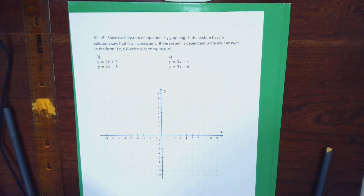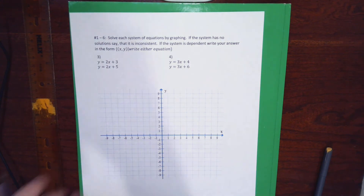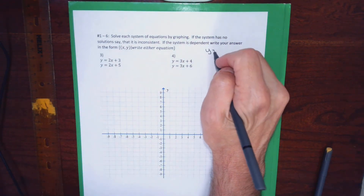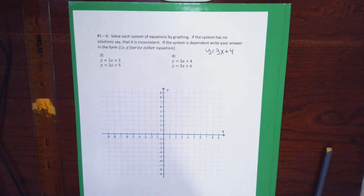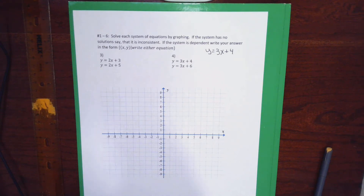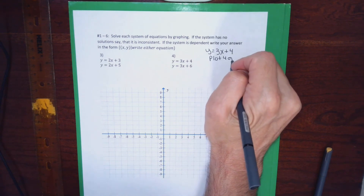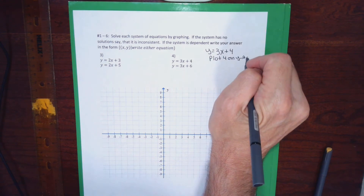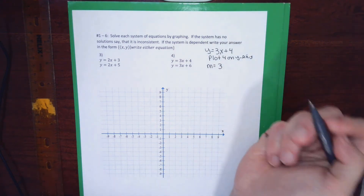Now I'll do number four — same style of problem. I'm given two equations that graph as lines. In problem four, both lines are written in y = mx + b form, so I can graph them without finding intercepts. For the first line, I'll graph by plotting 4 on the y-axis, then use the slope — which is 3, or three over one — to get another point.